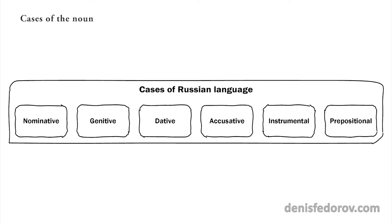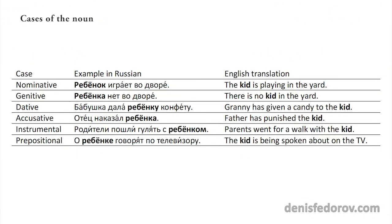The main point for all cases is that endings of nouns change according to the case. Let's look at the example. In the table we decline the noun ребёнок — 'kid' — in all six cases.